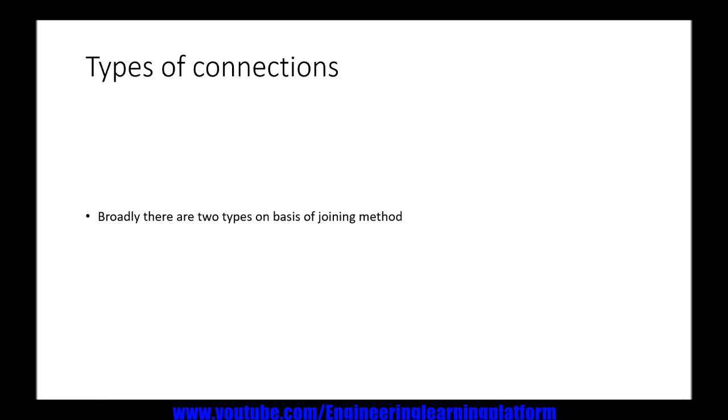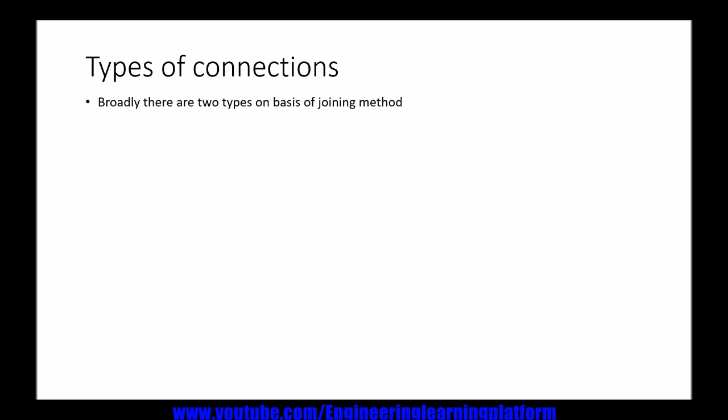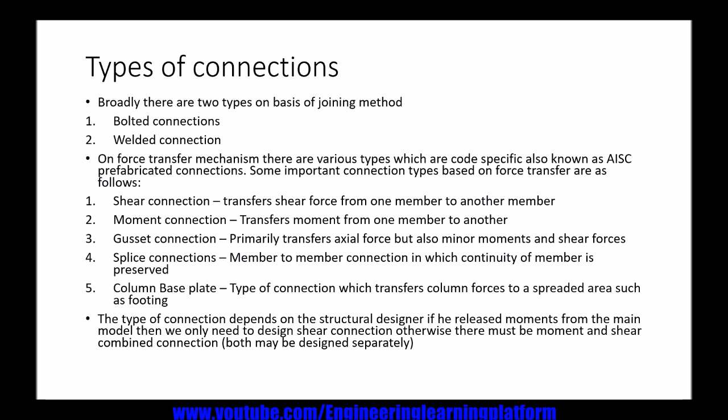It is important to discuss the types of connections. We have two types of connections broadly based on the type of joining: bolted connections and welded connections. Bolted connections involve joining of the members by means of bolts, while welded connections involve the connecting members joined together by weld with a specified thickness.